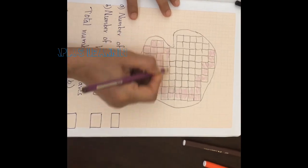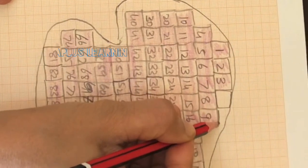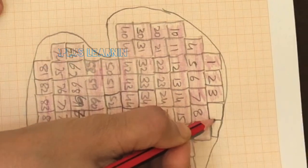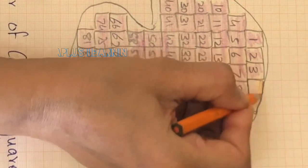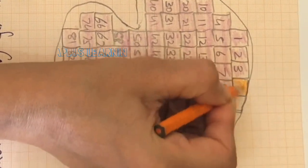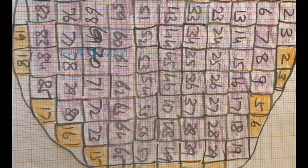Then mark and count the squares that are half or more than half. Here too, you can mark these squares using a different color and number it. You know the smallest squares which are less than half are to be discarded.